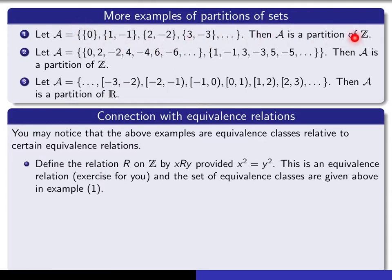For example, if you look at the first one and consider the relation on ℤ given by x is related to y provided x² = y², that's a simple exercise to show that's an equivalence relation. The equivalence class of 1 is all y such that 1² = y², meaning y is either +1 or −1. The equivalence class containing 0 is just {0}, since only 0 has square equal to 0. The set of distinct equivalence classes is exactly the partition of ℤ we saw.